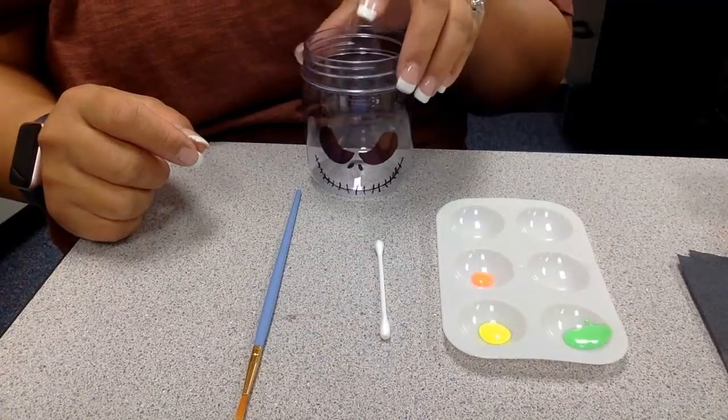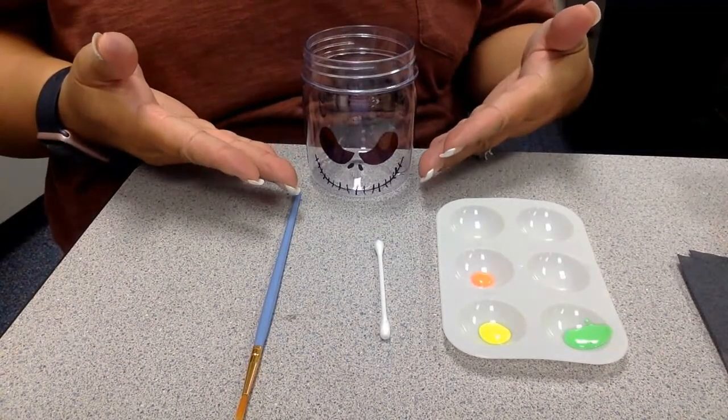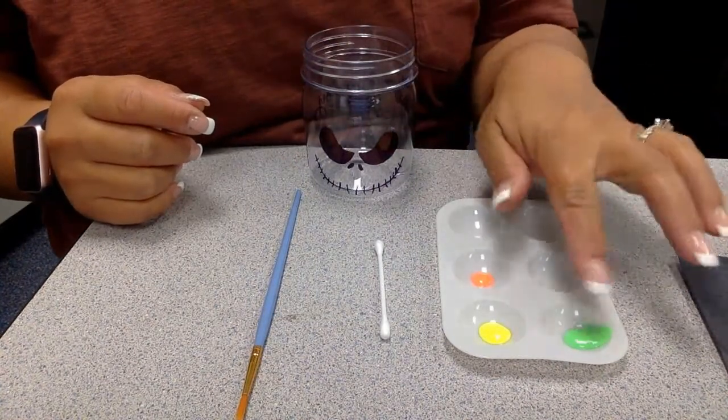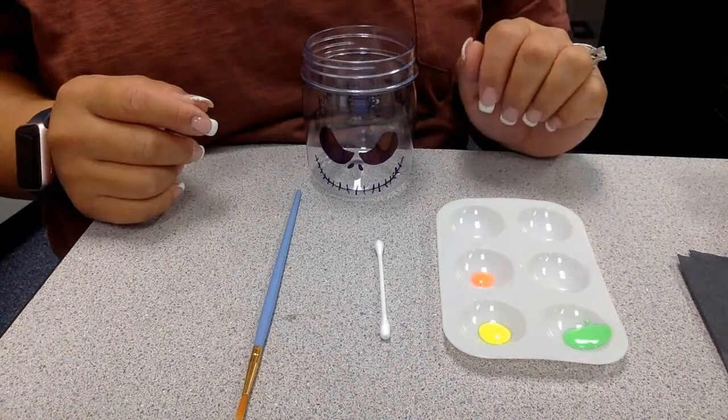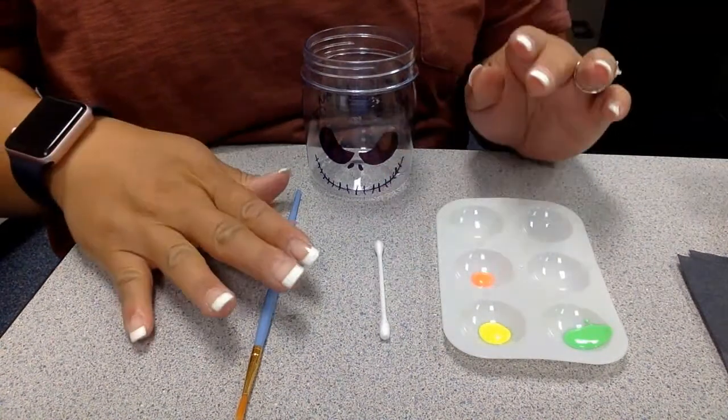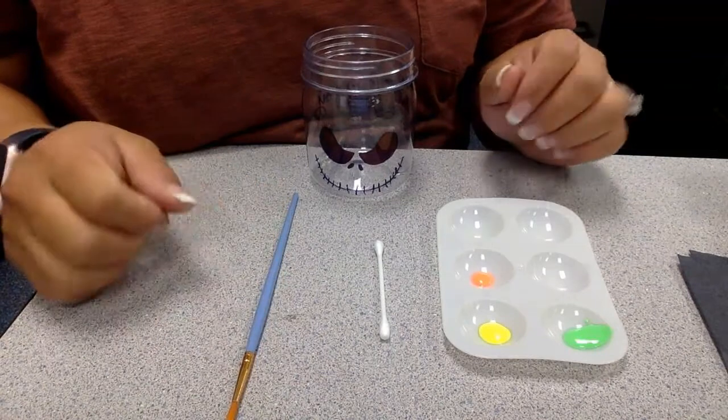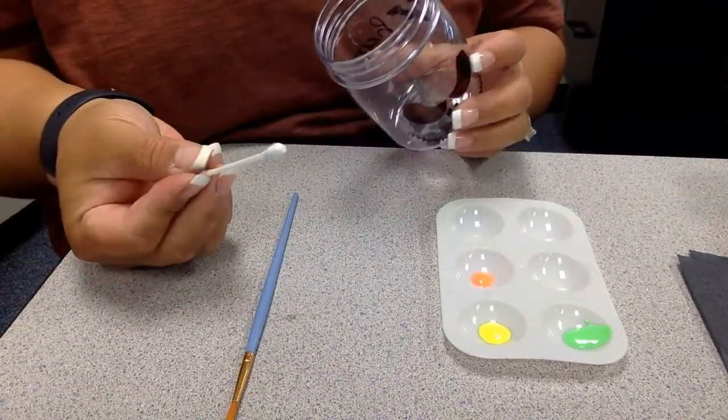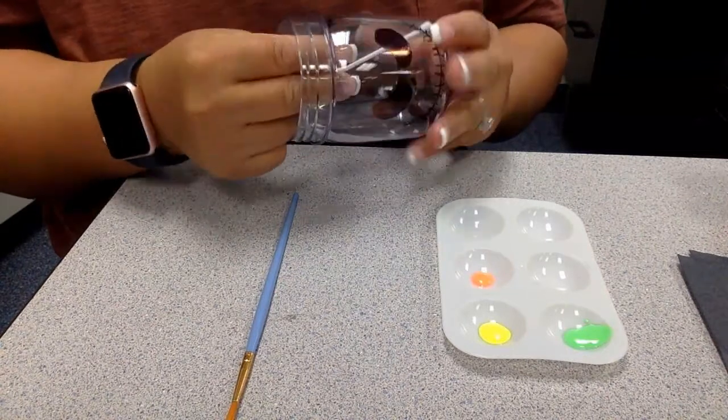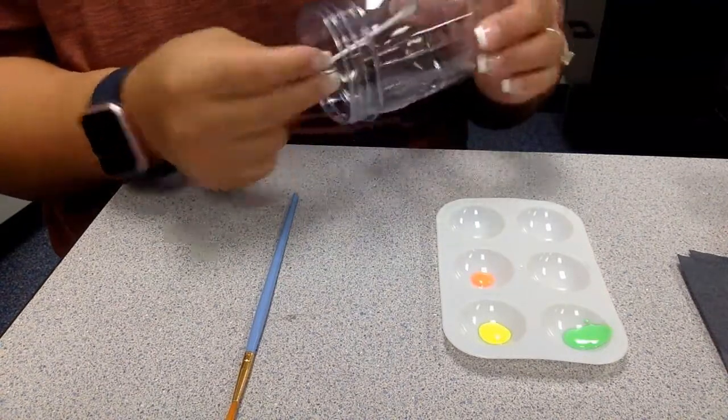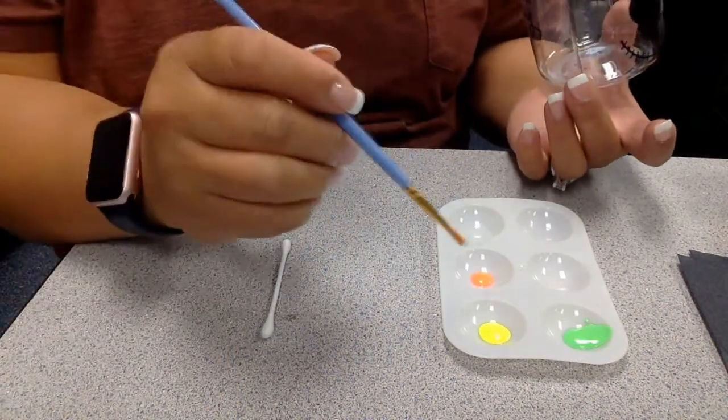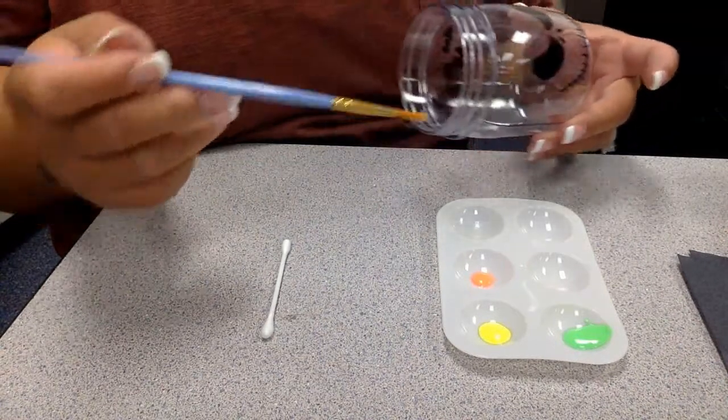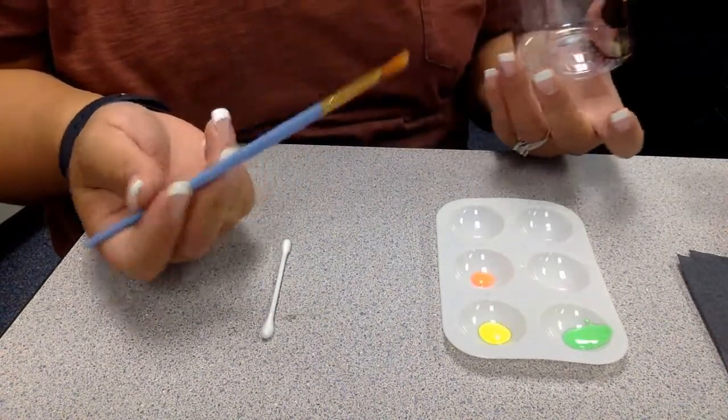Once you have your Halloween colored, what you want to do is here are three glow-in-the-dark paint and a q-tip and a paintbrush. So you can use either one however you want to do it. You can always do the q-tips depending on if you can reach in the jar or you can always use the paintbrush.